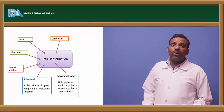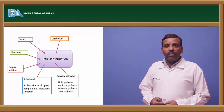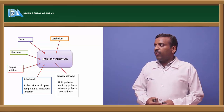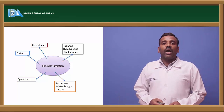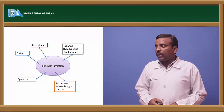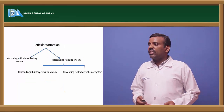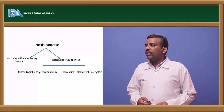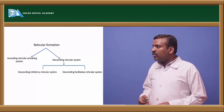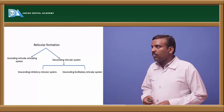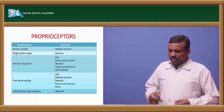Reticular formation connections: afferents come from the cerebellum, cerebral cortex, thalamus, corpus striatum, spinal cord, and sensory pathways. Efferents go to the thalamus, hypothalamus, subthalamus, cerebellum, cerebral cortex, spinal cord, red nucleus, substantia nigra, and tectum. The reticular formation divides into ascending reticular activating system and descending reticular system; the descending system is further divided into descending inhibitory reticular system and descending facilitatory reticular system.